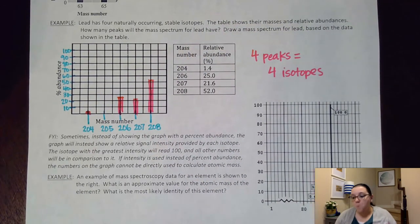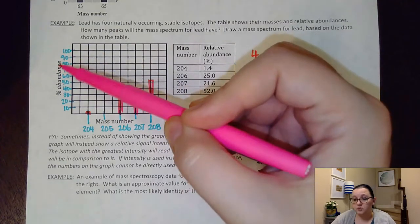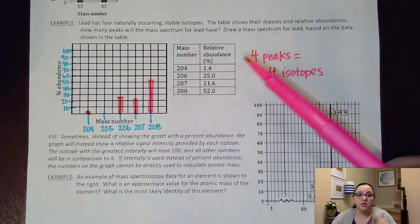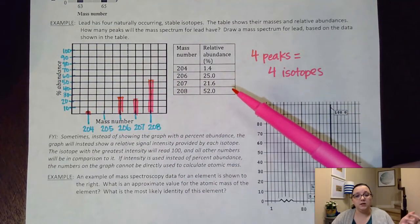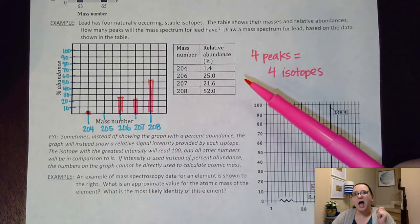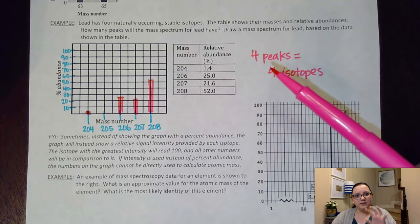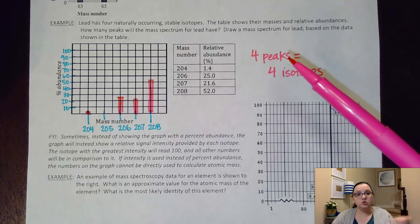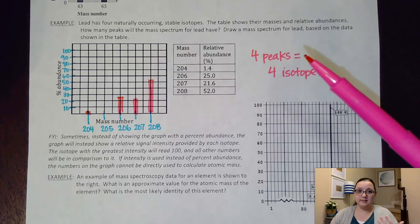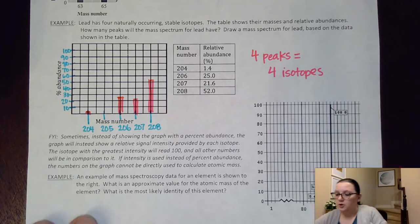Now, I will warn you. Most of the time, these graphs do show percent abundances. So then, I could use that information to go and directly calculate average atomic mass. However, every once in a blue moon, our mass spec data, instead of showing percent abundance, shows something instead called intensity. Basically, how intense is the signal?